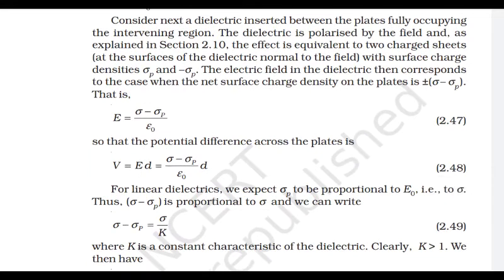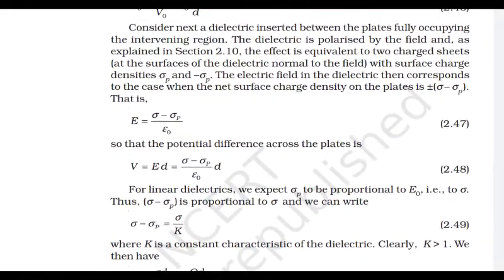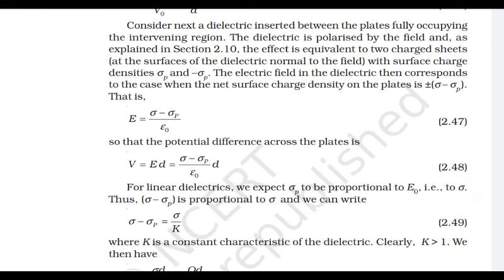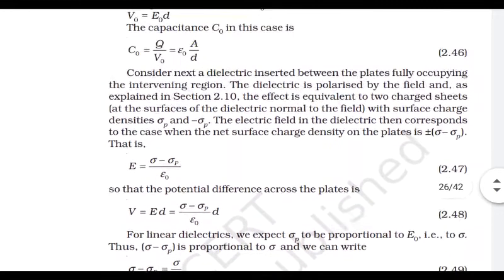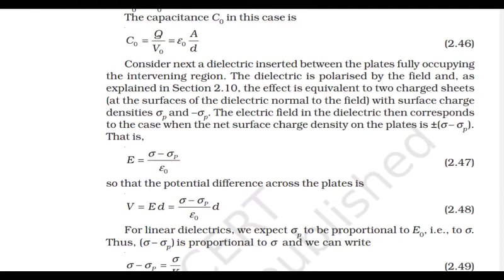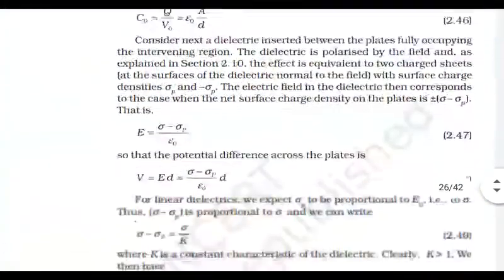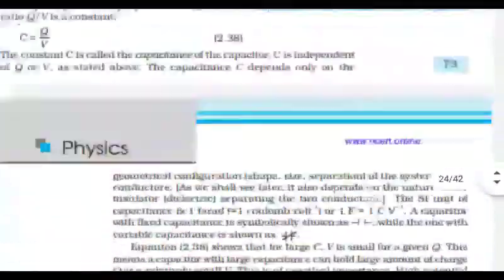The dielectric is polarized by the field from the two plates. As explained earlier, this is equivalent to two charge sheets with surface charge densities +σₚ and -σₚ appearing at the surfaces of the dielectric. So the dielectric also has induced surface charge densities σₚ and -σₚ. The electric field in the dielectric then corresponds to the case when the net surface charge density on the plates is σ - σₚ.